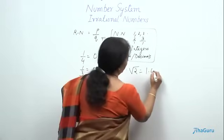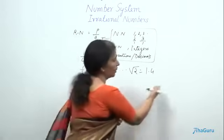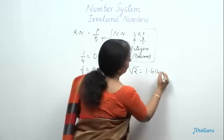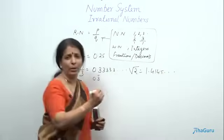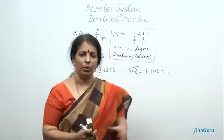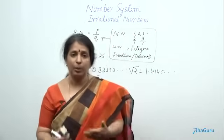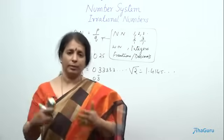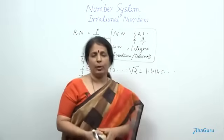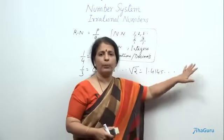We have generally taken root 2 as 1.4, but it goes on and on actually, and not with a pattern. It's actually 1.4145... and so on. The computers have found it up to millions of places. There are competitions where a person has to memorize and tell all these numbers in order. It goes on and on with no pattern for it.